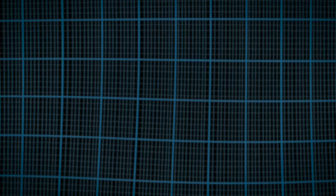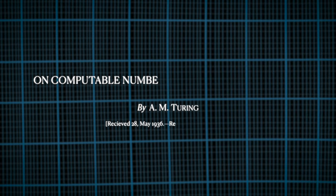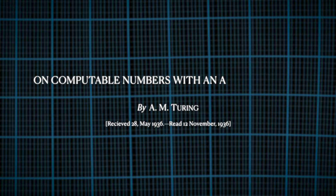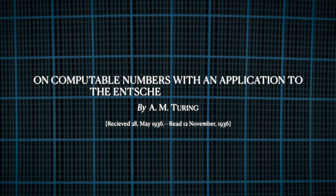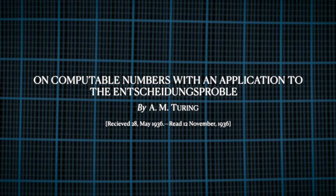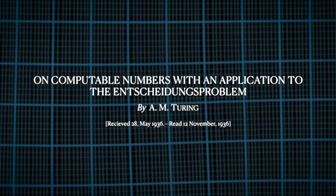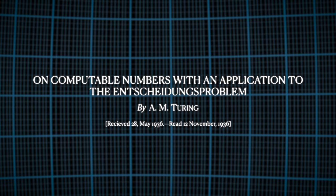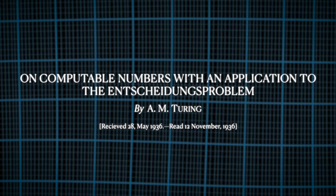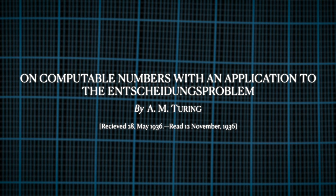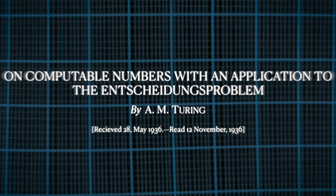But five years prior, in 1936, he would go on to write a paper that changed the course of history, titled 'Computable Numbers with an Application to the Entscheidungsproblem,' laying the theoretical foundation of modern computing.